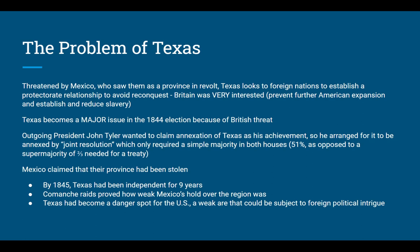The outgoing president, John Tyler, wanted to claim the annexation of Texas as his own achievement and worked hard to make it happen before leaving office. Normally, annexing Texas — which Jackson had recognized as an independent republic — would require a treaty needing a two-thirds vote in both houses, which wouldn't pass a Northern-dominated Congress. So Tyler arranged for it to be annexed by joint resolution, which required only a simple majority of 51%, which was plausible.